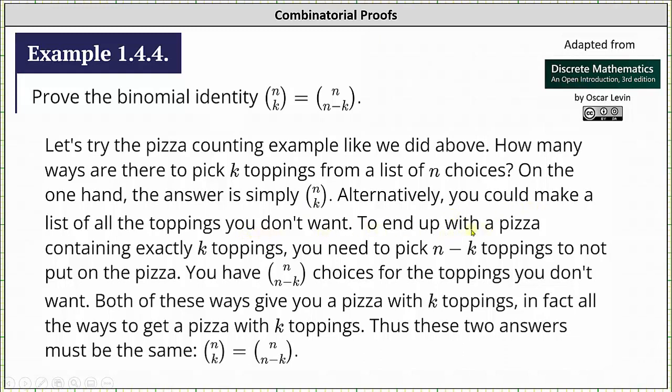Alternatively, you could make a list of all the toppings you don't want. To end up with a pizza containing exactly k toppings, you need to pick n minus k toppings to not put on the pizza. You have n choose n minus k choices for the toppings you don't want.